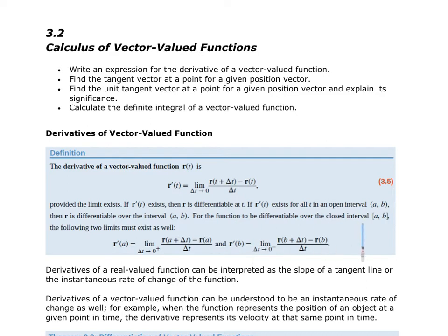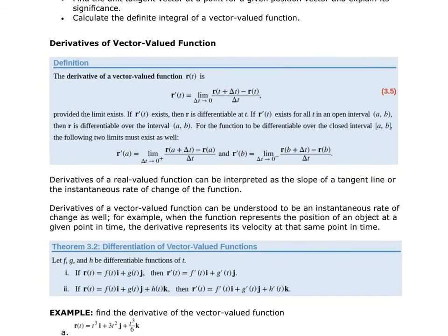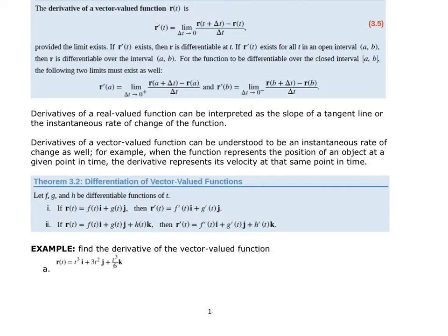If we are differentiating over a closed interval, that means we get to include the endpoints, and these two limits must also exist. When talking about derivatives, one interpretation is the slope of the tangent line, or we can think of it as the instantaneous rate of change. If our original vector-valued function is the position at some given time, then the derivative can be interpreted as the velocity, and the second derivative as the acceleration.